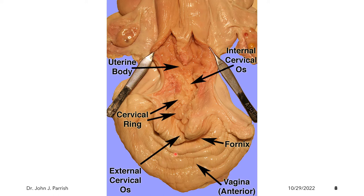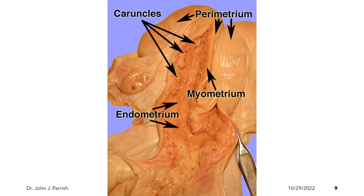This is the anterior part of the vagina and this is the fornix. When we continue to cut up towards the uterine horn, we can see the presence of the caruncles. These are the areas where the placenta will attach to the uterus.